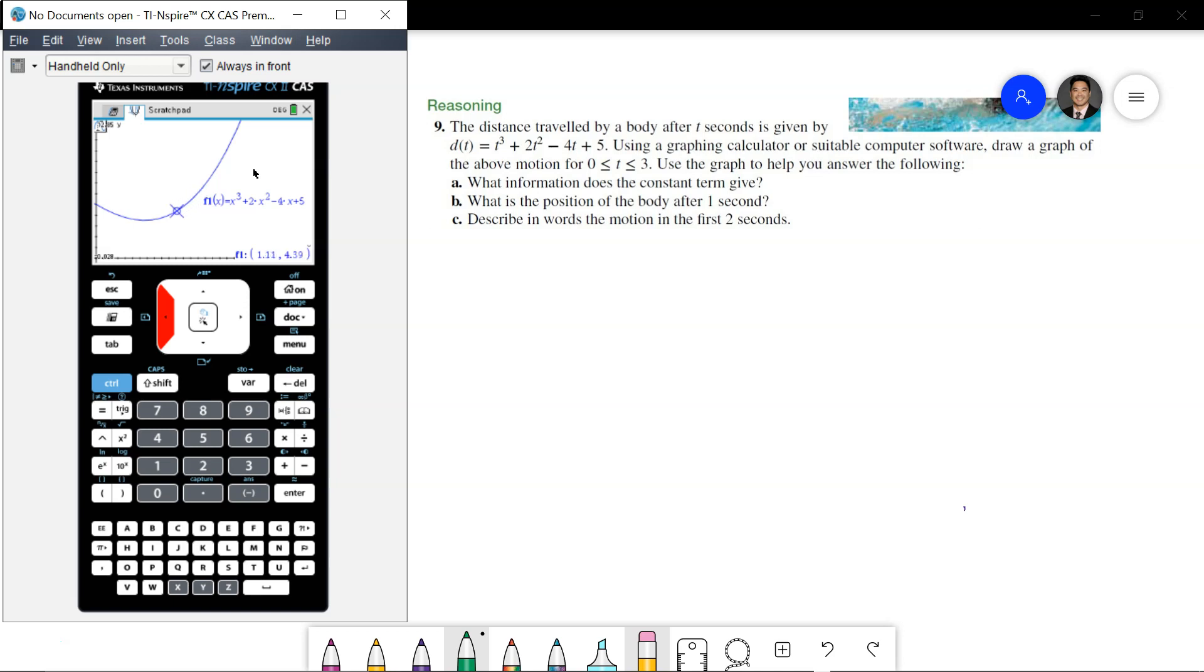And so, what I'm going to do is move around to where I see 1, and for some reason, last time I did this, it will go straight to 4. So, just imagine this is 1, this is 4, and so the position of the body after 1 second is actually 4 units.